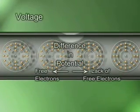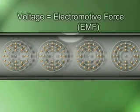Voltage is the measure of the difference in potential between an area with an excess of free electrons and an area with a lack of free electrons. Because the voltage potential causes the electrons to flow along a path, voltage is often referred to as electromotive force. The rate at which the electrons flow is called current.